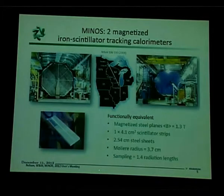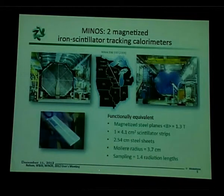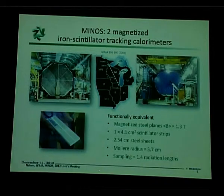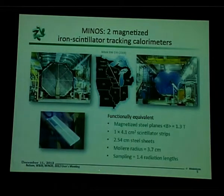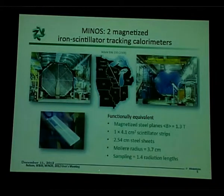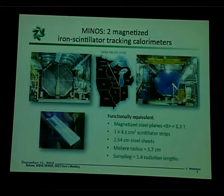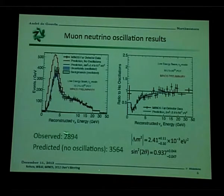This atmospheric neutrino phenomenon is confirmed by accelerator experiments. The MINOS experiment at Fermilab produces a pion beam, lets the pions decay, and shoots neutrinos across Wisconsin to a detector in Minnesota—a distance of about 730 km—which means the beam has to be pointed slightly downward. They look for the disappearance of muon-type neutrinos. The red line is what they expect for the number of muon neutrinos as a function of energy, the points are data, and the blue line is the result of an oscillation fit.